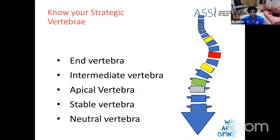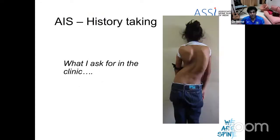To quickly revise: end vertebrae are the maximally tilted vertebrae; intermediate vertebrae are the end vertebrae on bending films; apical vertebra is the apex of the curve — least tilted but most deformed; stable vertebra is best bisected by the central sacral vertical line at the bottom of the curve; and neutral vertebra is the least rotated vertebra at the bottom of the curve.